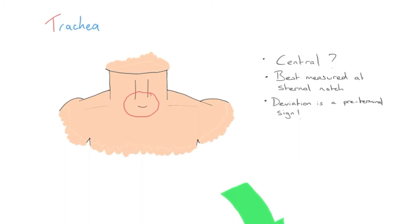Tracheal deviation is a pre-terminal sign — when we see this, the patient is at risk of going into cardiac arrest quite rapidly. Hopefully you've already seen many other signs of tension pneumothorax before this: air hunger, blood pressure in their boots, poor chest expansion, hyper-resonance. But if we've missed all those other signs, tracheal deviation is our last chance to catch the diagnosis. A respiratory rate of 60 breaths per minute with the chest not moving properly and the trachea shifted — that tells us we need to act immediately.